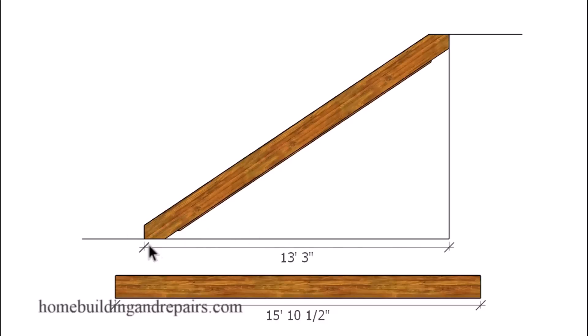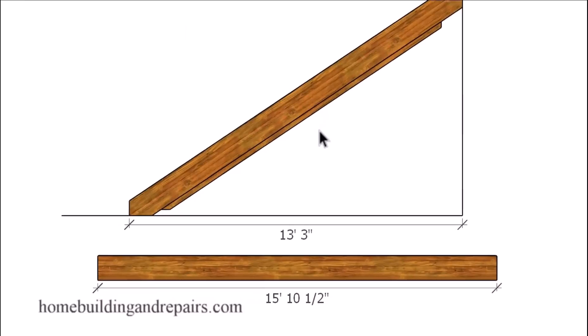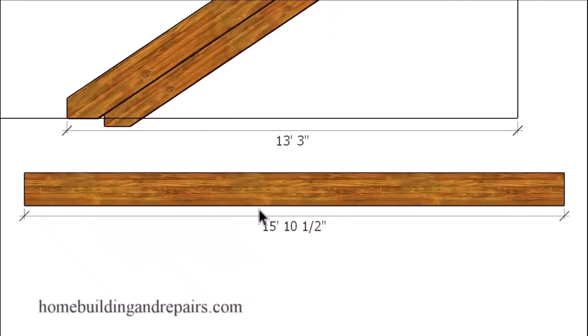And to calculate the actual length of the stair stringer you're going to need to do a little bit of math, and I do have another video on that. I will put a link to that in the video description box. Because the actual length of the stair stringer in this example with a 7 inch individual riser for each step is going to be just a little bit under 16 feet.